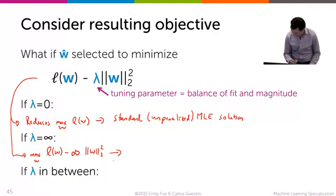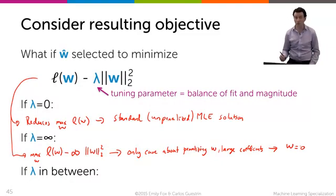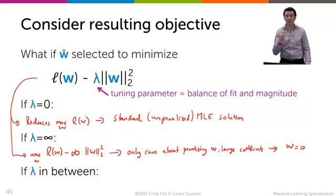And so that pushes me to only care about penalizing the coefficients. So penalizing w or penalizing the large coefficients, which will lead to just setting all of the w's equal to 0. Everything will be 0.